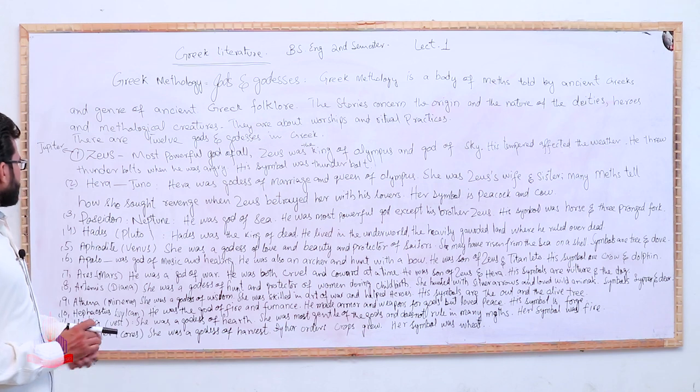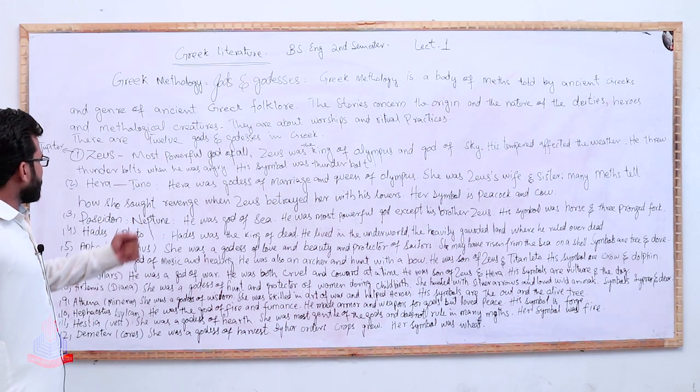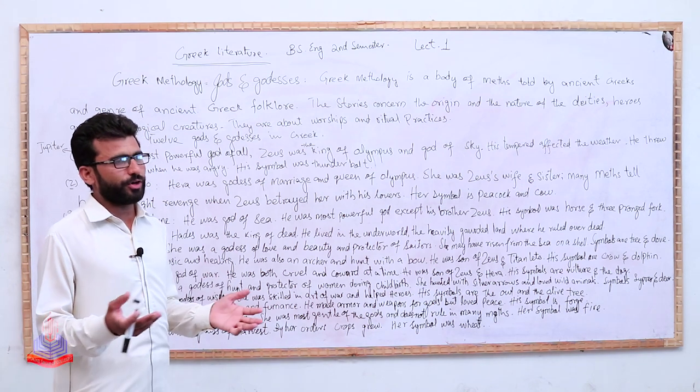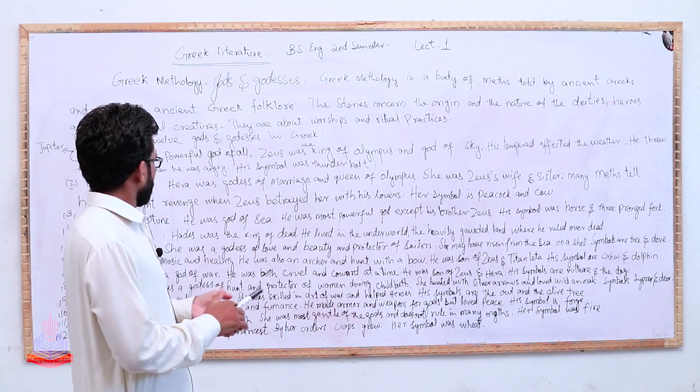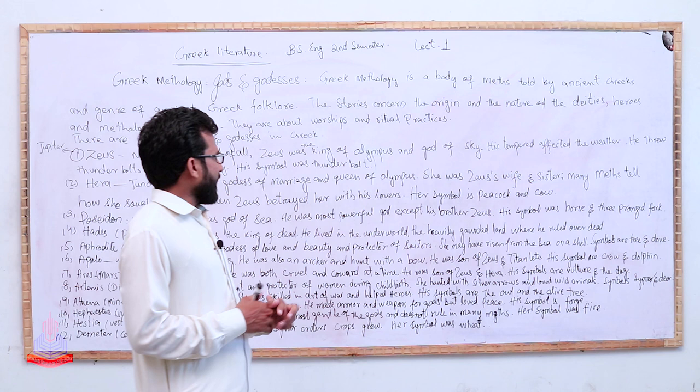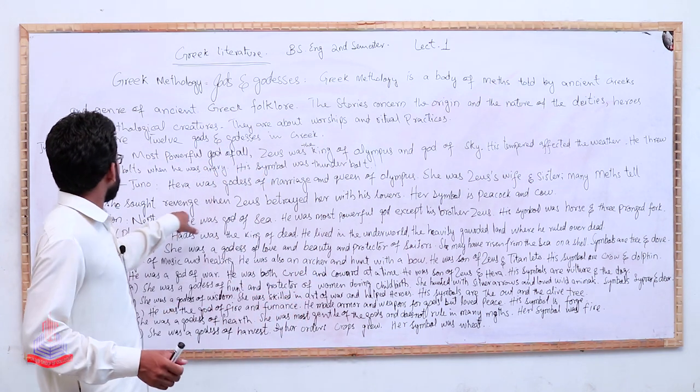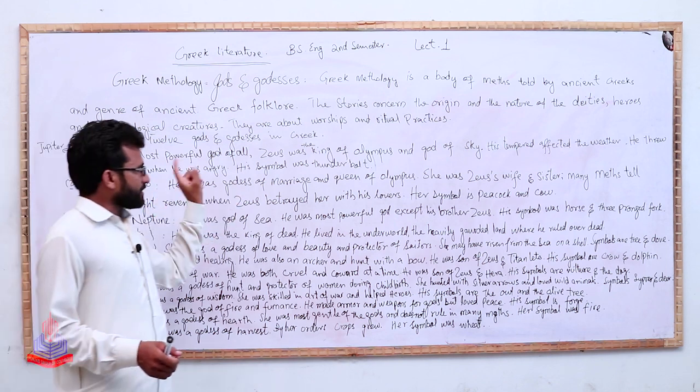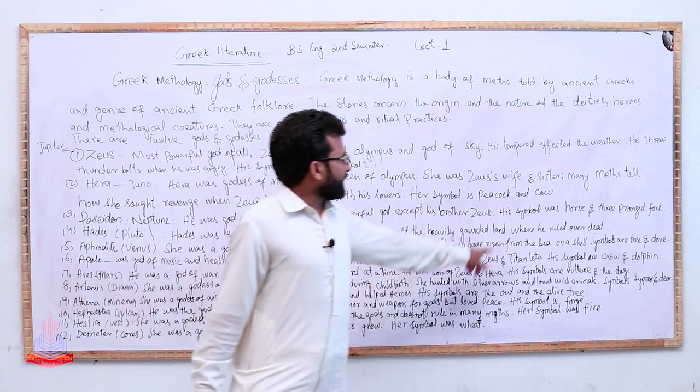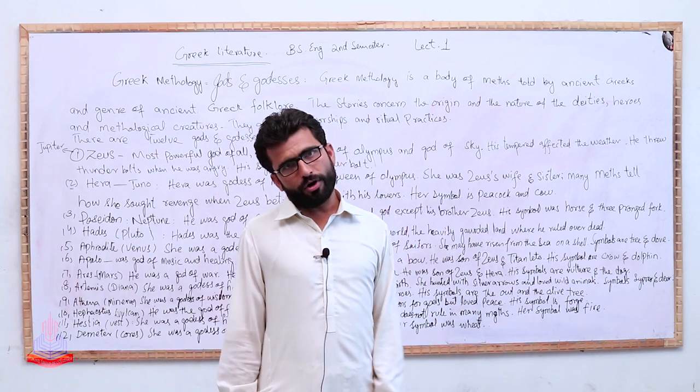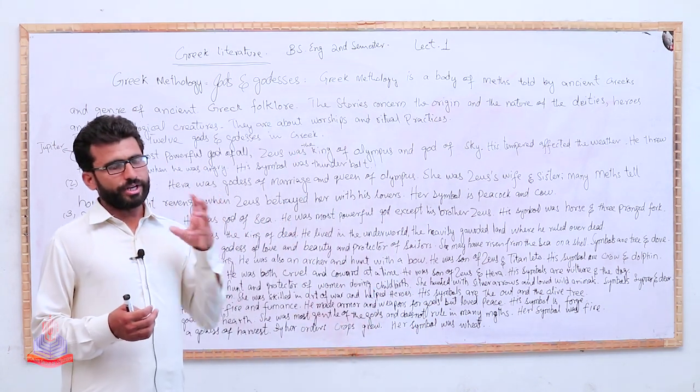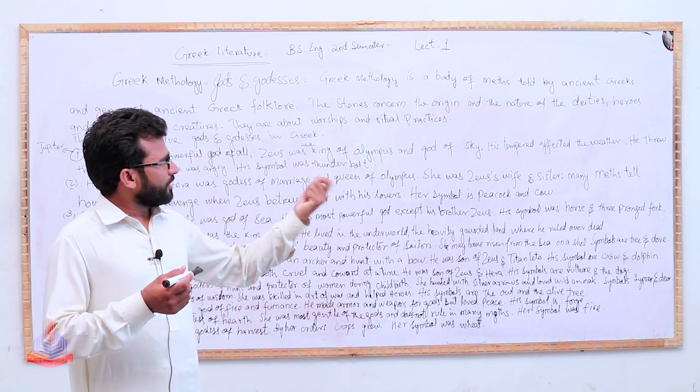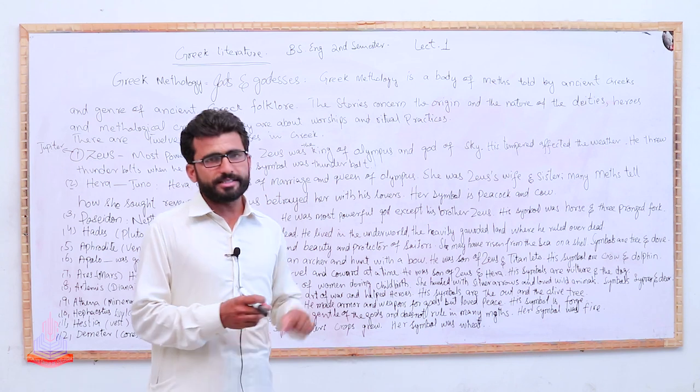Next number three, Poseidon. Poseidon in Roman they say Neptune. He was god of sea, god of oceans, god of waters you can say. He was most powerful except his brother Zeus. Poseidon was a brother of Zeus, but except Zeus he was the most powerful god of all. His symbol was horse and three-pronged fork - you know fork, a three-pronged fork.